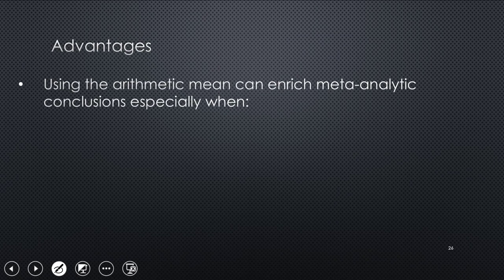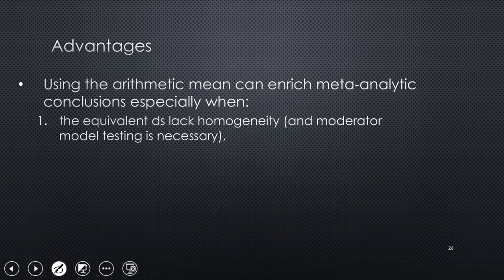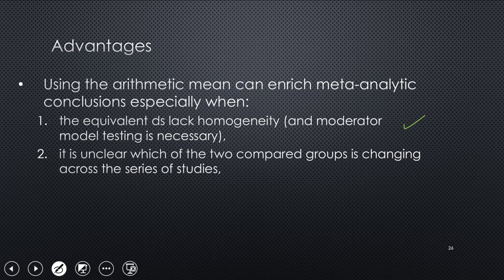So you've got similar cultural effects happening for the men and women, the boys and girls in each of these comparisons. And that's why they stay relatively close to each other. Now, some advantages of this strategy is that it can enrich your conclusions to see that model. You've got moderators going on in like a standardized mean difference. And the equivalent effect size is lack homogeneity. So you're maybe getting more details about what's happening with patterns. It's unclear which of two compared groups is changing across the series of studies. And that SMD is tricky because it can get negative or positive, bigger or larger, depending on either group's movement or both.